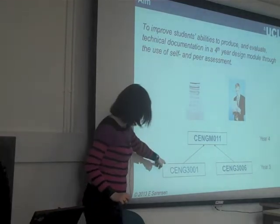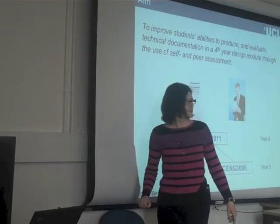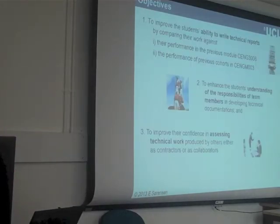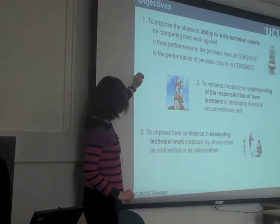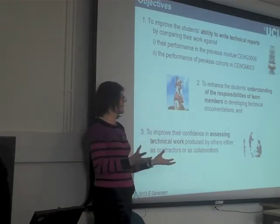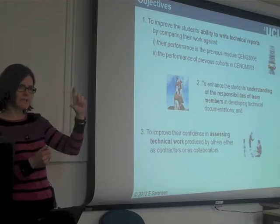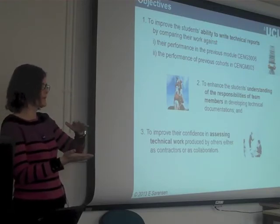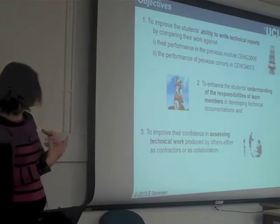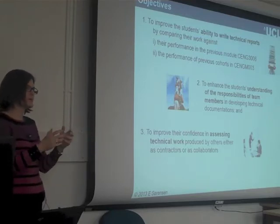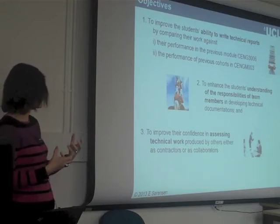It's building on two modules from the year three course: one on process control and the large year three design project. The key objective of the peer assessment is that we want them to write good reports but also to do this as a team. Because what we often get with design reports is that each student writes their own section — six or eight pages — and they just put them together with a brief introduction and conclusion. We want them to write reports that read as if written by one person, so team responsibility for documentation is very important.